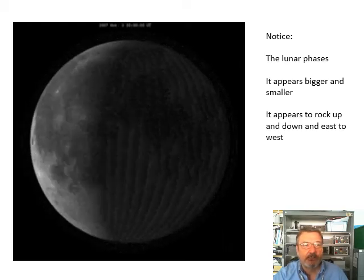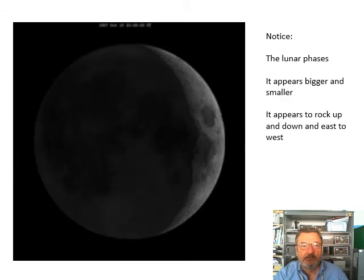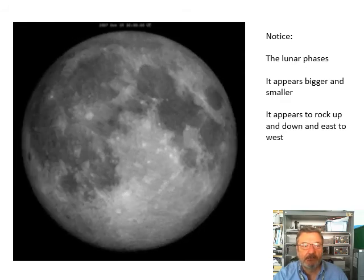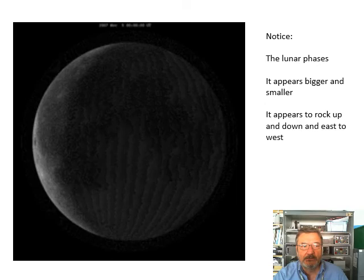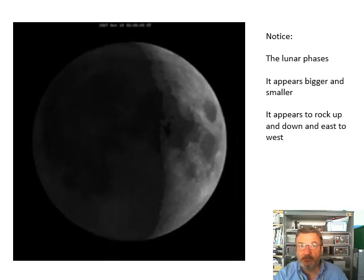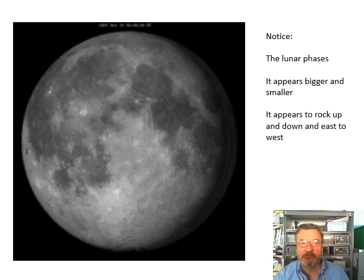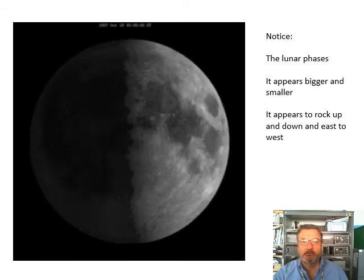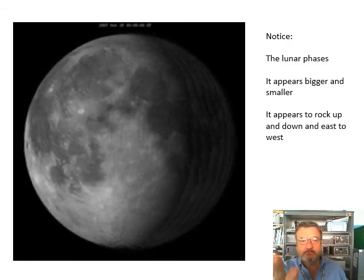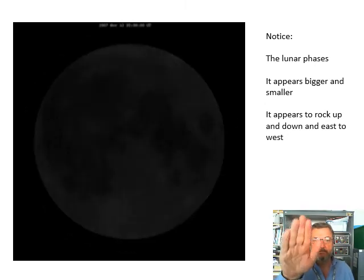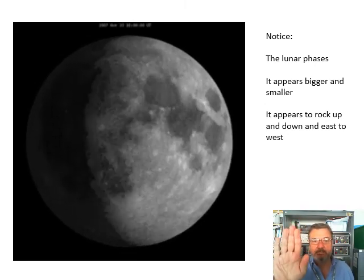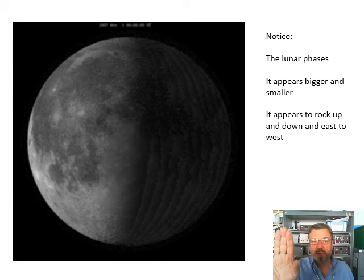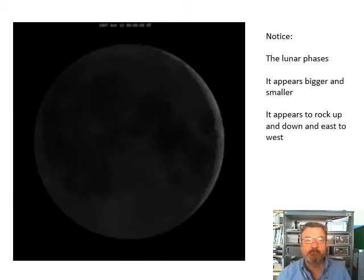Obviously the phases of the Moon I'll talk about in another video. Notice that the Moon appears bigger and smaller - it's big, then it's smaller, then it's bigger, then it's smaller. The Moon appears bigger and smaller because it's closer and further away. Also looks as though it's rocking up and down.